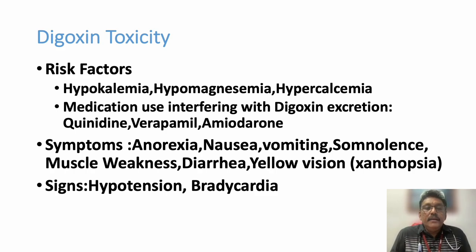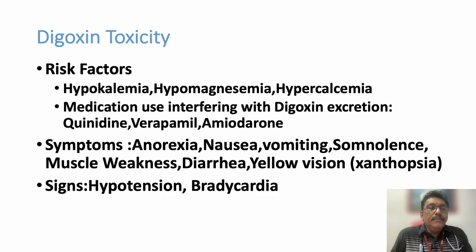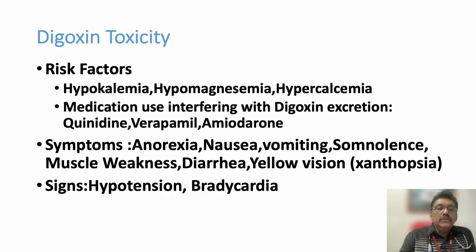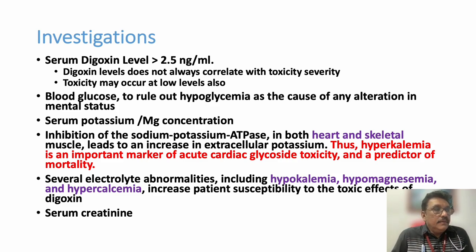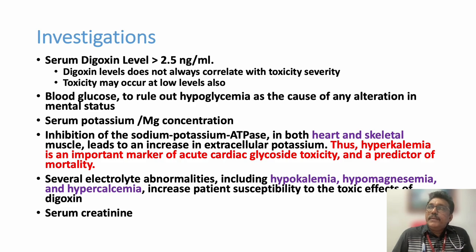Symptoms of Digoxin toxicity include anorexia, nausea, vomiting, increased sleepiness, muscle weakness, diarrhea, and yellow vision. Any patient on Digoxin — especially with renal failure — presenting with severe nausea, vomiting, and abdominal pain should raise suspicion of Digoxin toxicity. Other findings include hypotension and bradycardia. An ECG should always be taken, as almost all arrhythmias including bigeminy, trigeminy, and paroxysmal atrial rhythm with controlled heart rate are common.